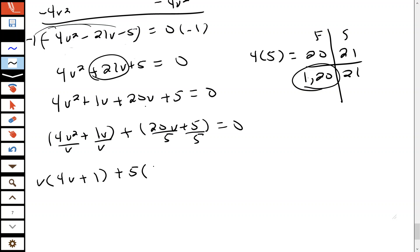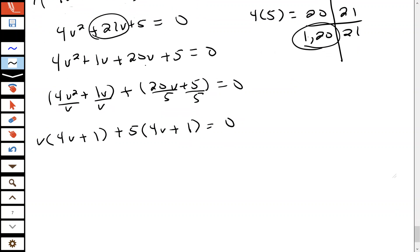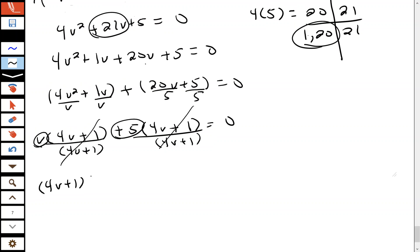The GCF of the second group is 5. Again, that leaves me with 4v + 1 in the parentheses, so I have that common binomial of 4v + 1. Now I'm going to factor out the common binomial, which is 4v + 1. When I factor out the 4v + 1, that leaves me with v + 5 to go in the other set of parentheses.